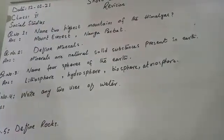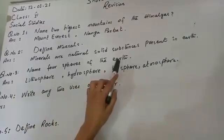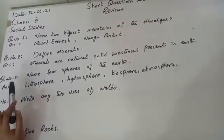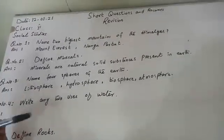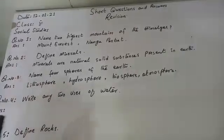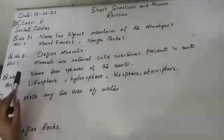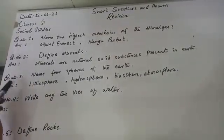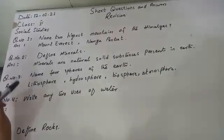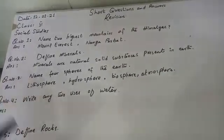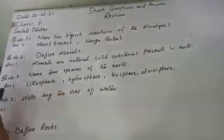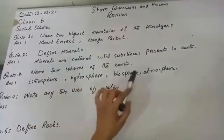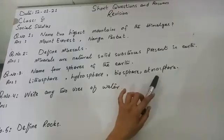Question number three: name the four spheres of the Earth. We covered this in our last lecture on spheres of the Earth. You need to practice the diagram, practice the labels, and learn them. The four spheres are: lithosphere, hydrosphere, biosphere, and atmosphere.